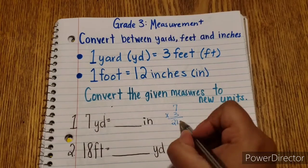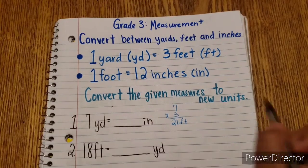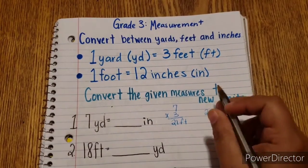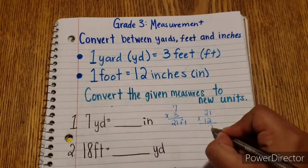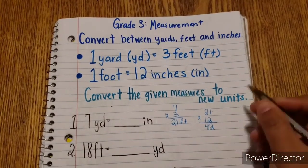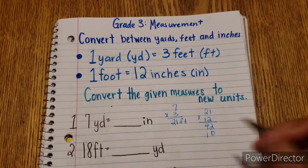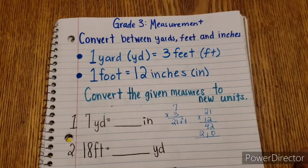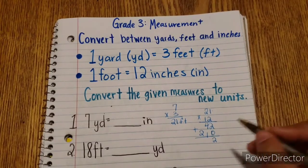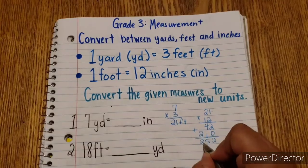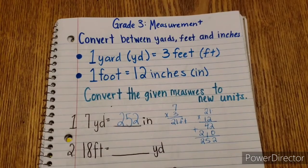Now let's go from feet to inches. Since 1 foot equals 12 inches, we want to do 21 times 12. First: 1 times 2 is 2, 2 times 2 is 4, then we have a 0. Then 1 times 1 is 1, and 2 times 1 is 2. Adding up: 2 plus 0 is 2, 4 plus 1 is 5, and 0 plus 2 is 2. So the answer is 252 inches.